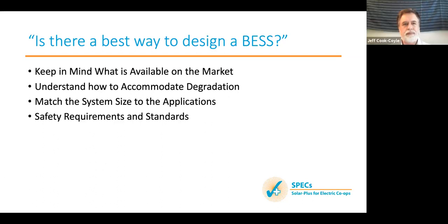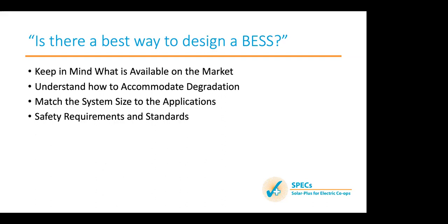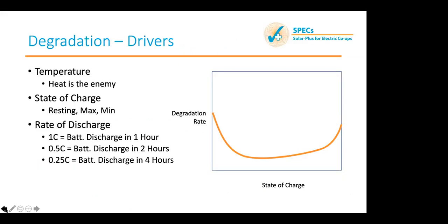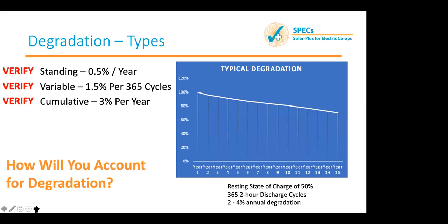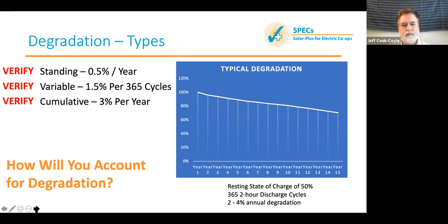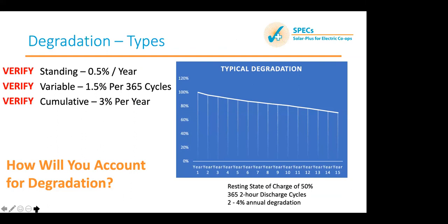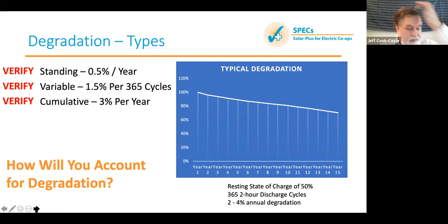Asked whether degradation applies to energy capacity or power capacity: the inverter does not degrade — the power capacity remains the same. It is the energy capacity that degrades. So at the end of 10 years, with approximately 20% degradation, that applies only to the energy stored in the battery, not to the one megawatt power output.